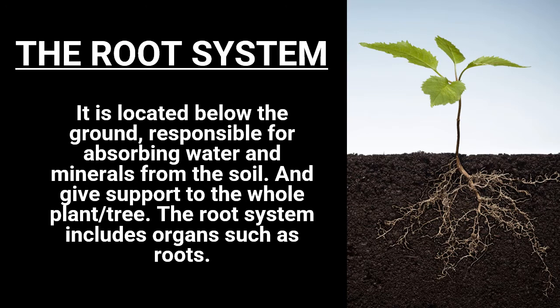First comes the root system. It is located below the ground, responsible for absorbing water and minerals from the soil, and gives support to the whole plant or tree. The root system includes organs such as roots.